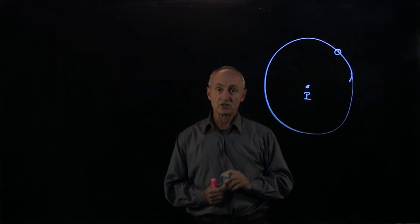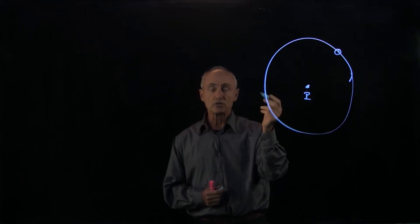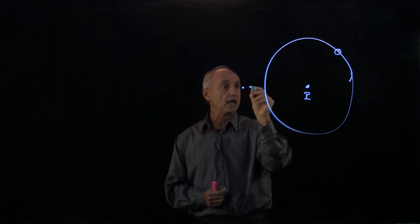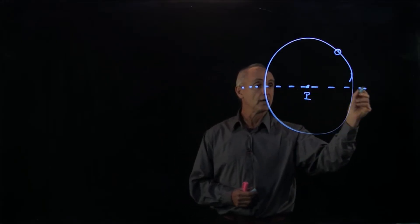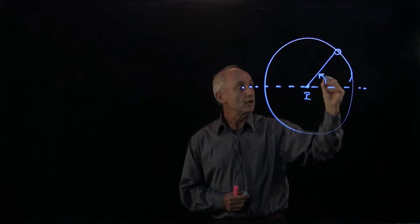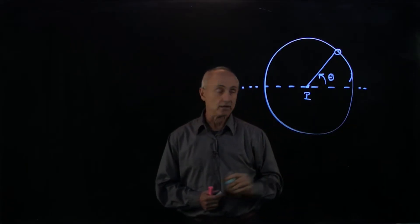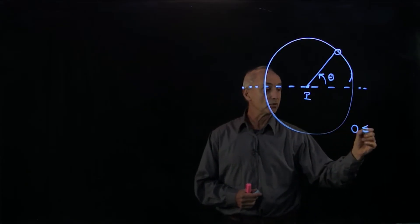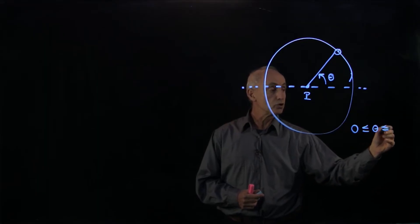The way that coordinate system works is as follows. First, we need to choose a reference angle. We'll choose a horizontal line and draw a ray showing the direction of increasing reference angle theta. In this example, theta will go from 0 to 2π.